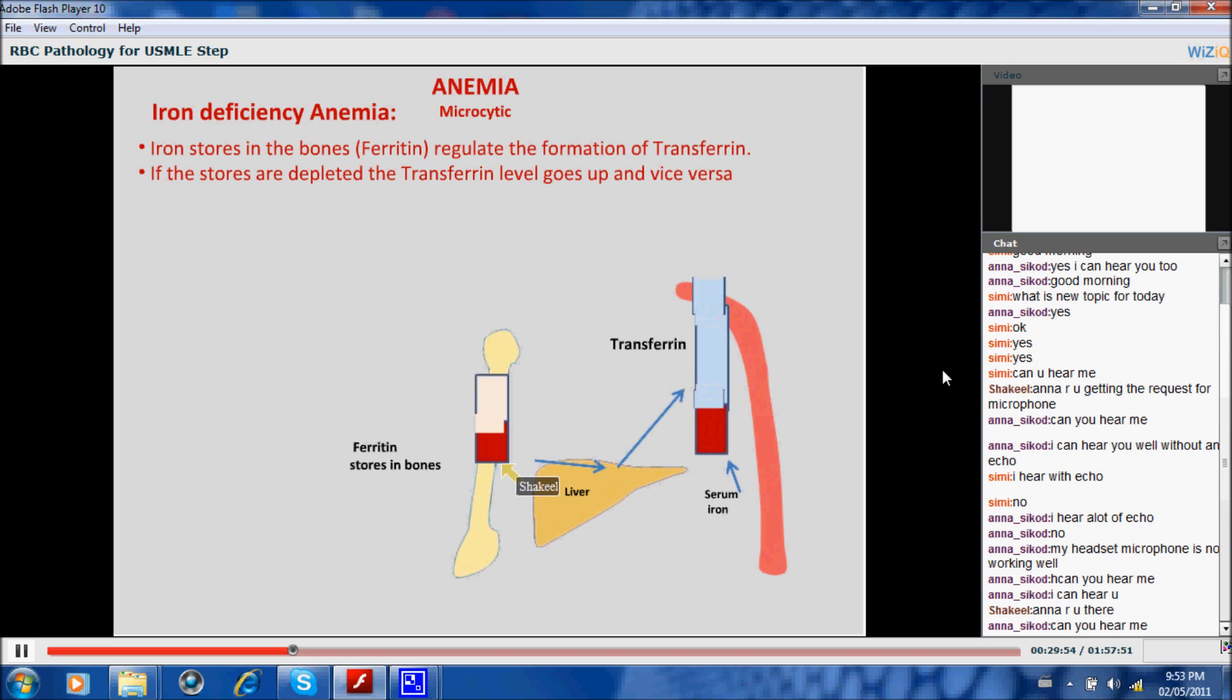The binding form of iron will be less. So it will be something like this: the stores go down, the transferrin protein becomes more, but because there is no iron to saturate, therefore the saturation of iron will be less. So what you will see here is ferritin low, transferrin level high, but the saturation low because there is no iron. The body is trying to manufacture more transferrin to get the iron, but the iron is low, so therefore the saturation will be low.